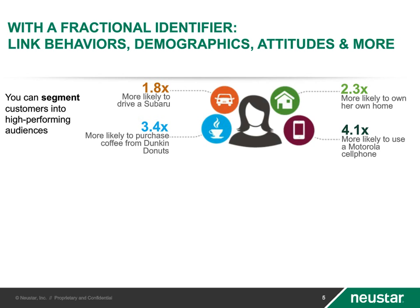If you've got the personal identifiers — a mobile phone, an address — with that persistent identifier, you can link back and say I'm a Segment 35. We can then say, all right, you're interacting with this person, whether in real-time or batch. This person is a Segment 35, and we know because of market research tied to 35s that they are 1.8 times more likely to drive a Subaru, 3.4 times more likely to purchase Dunkin' Donuts, 2.3 times more likely to own their home.